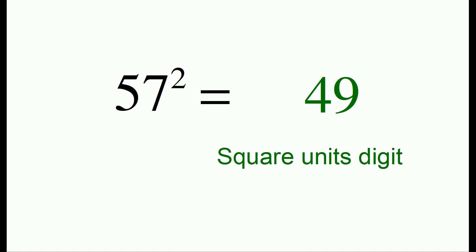The second step is to take 25 plus the unit's digit. So we're going to take 25 plus 7 to get 32. And that's our answer, 57 squared is 3,249.